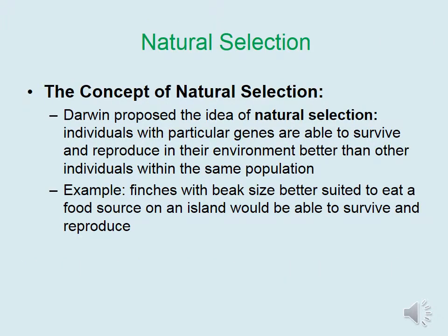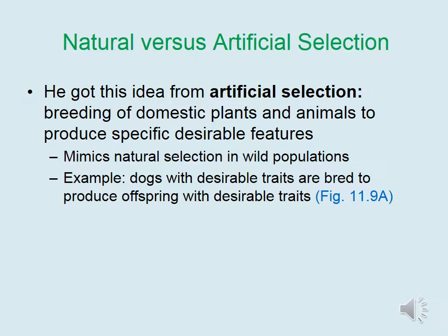Darwin proposed the concept of natural selection, which states that individuals with particular genes are able to survive and reproduce in their environment better than other individuals within the same population. For example, finches with beak size better suited to eat a food source on a particular island would survive and reproduce better than other members of the population. Darwin got the idea of natural selection from artificial selection, which is the breeding of domestic plants and animals to produce specific desirable features — essentially mimicking what happens during natural selection in wild populations. An example of artificial selection is in dogs, where dogs with desirable traits have been bred to produce offspring with desirable traits, leading to everything from the Great Dane to the Chihuahua.